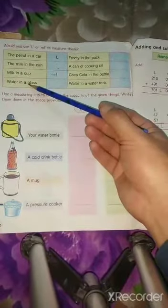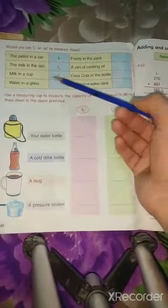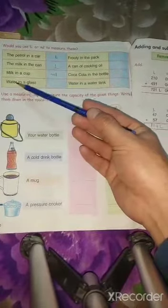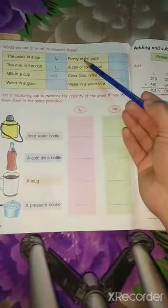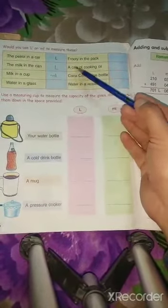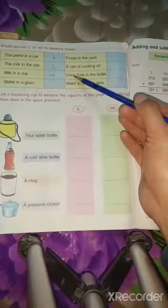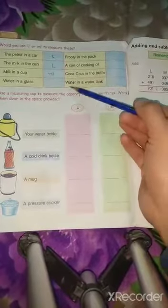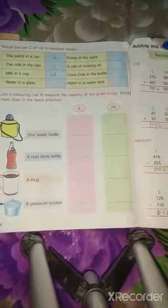Next, remaining one, two, three, four, five sums. Practice at home. I will read these sums. Water in a glass. Then, fruity in the pack. Next one is a can of cooking oil. Next, Coca-Cola in the bottle. And last one is water in a water tank.